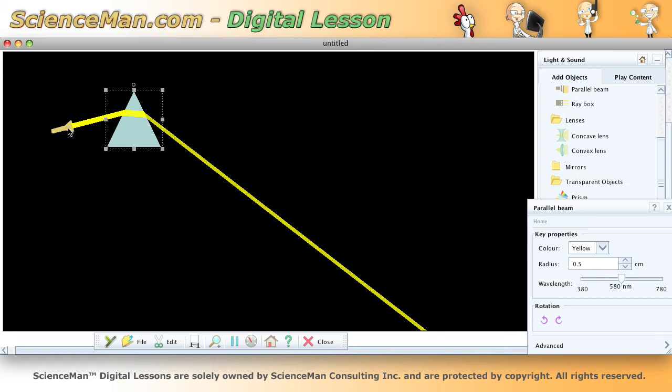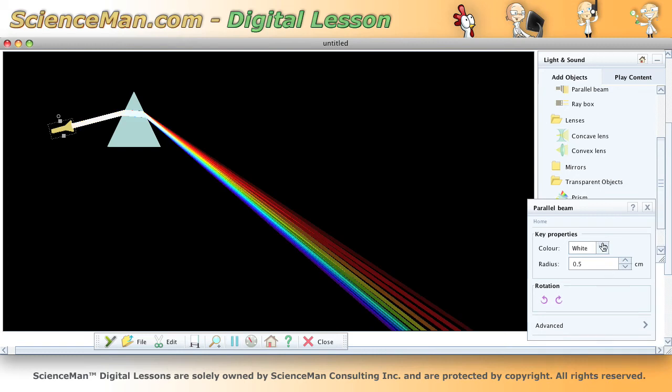So what we need to do is change that yellow light to white light. As soon as we do that, voila, we have a beautiful spectrum produced by the prism.